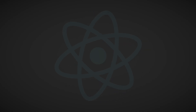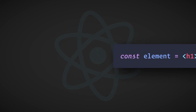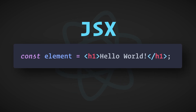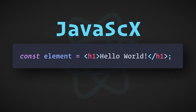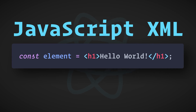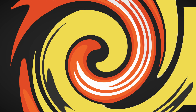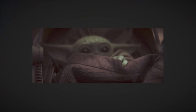In React, you'll often see things like this. It looks a little strange, and it's not HTML — it's JSX, also known as JavaScript XML. It's a syntax extension to JavaScript. It's like HTML and JavaScript had a baby. You get a template language and the full power of JavaScript all in one.